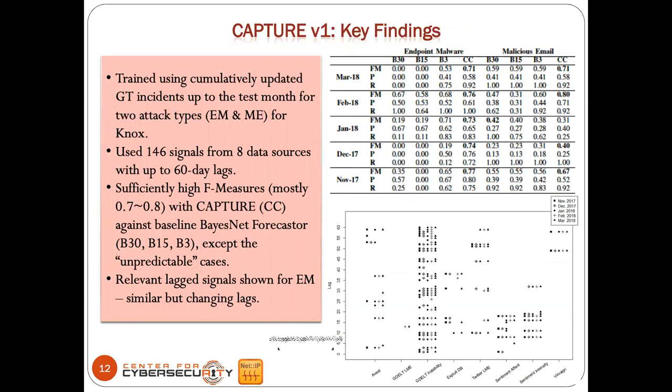Another question: can we know what emails are problematic — scam, malware — and who are the victims? In the slide, E-M stands for endpoint malware and M-E stands for malicious email. These are coded by the testing team of the CAUSE program. Malicious email means the email contained a link or attachment used as a means to reach end users. Endpoint malware means detection of malware sitting on a system. Those are the two different attack types coded by the testing team.